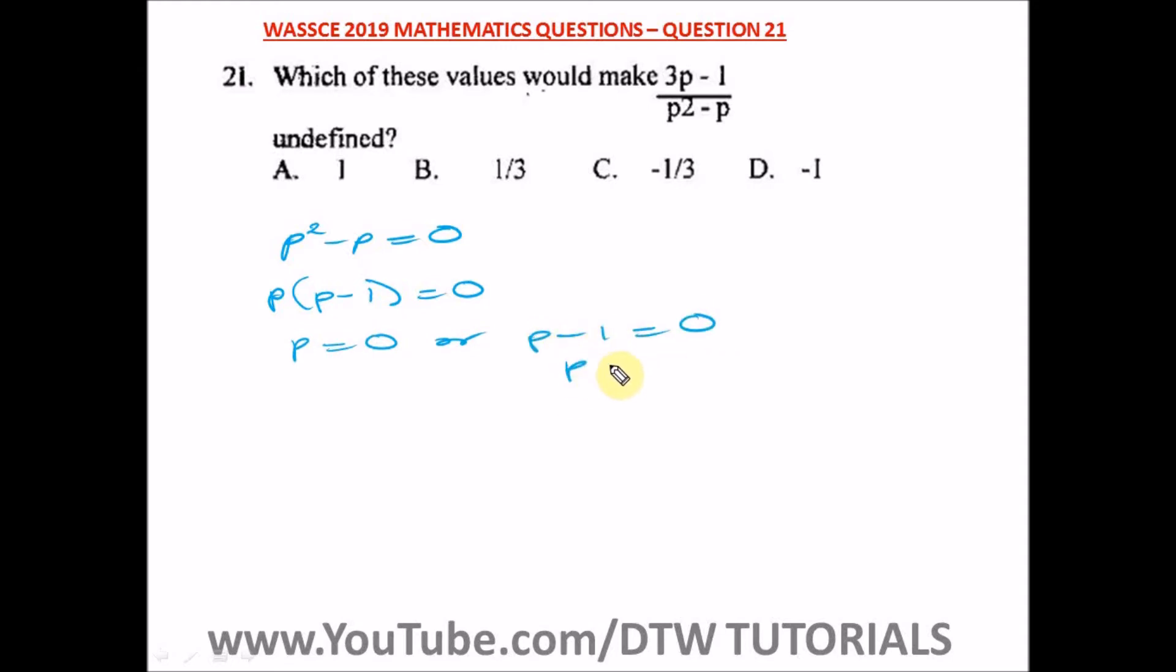From here, p is equal to, take this minus to the other side, we have a positive one. So this particular equation is undefined at p equal to zero or p equal to one.